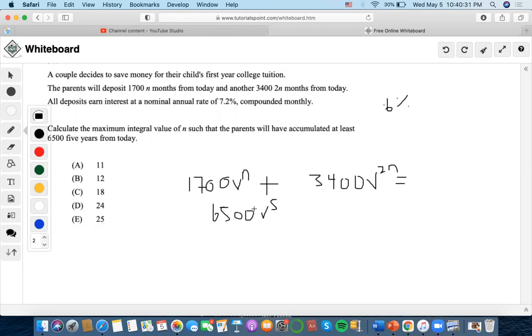Now, we already have this set up to find N. Let's do $6,500 times 1.006 to the negative 5th.